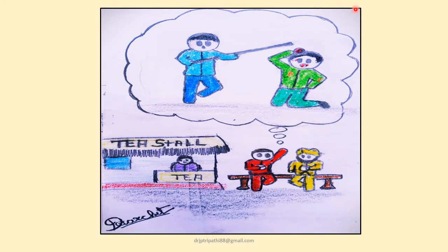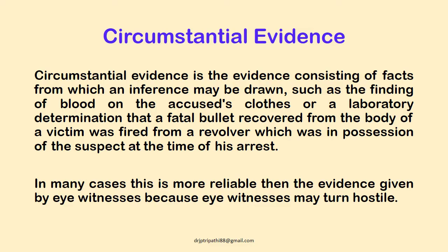The illustration shows a tea stall where Mr. Red and Mr. Yellow are sitting and discussing. During the discussion, Mr. Red told Mr. Yellow that he had seen Mr. Blue hitting Mr. Green. When Mr. Yellow appears in court to give his statement, Mr. Yellow is termed as indirect oral evidence because he did not directly see, hear, or perceive the incident — he is only giving his statement on the basis of what he heard from another person.